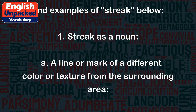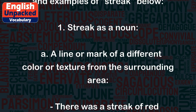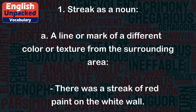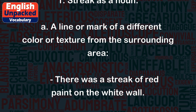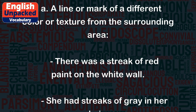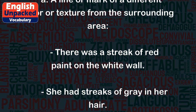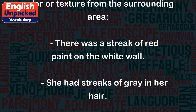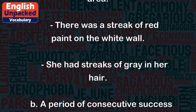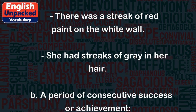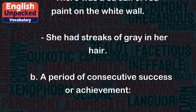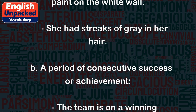1. Streak is a noun. A. A line or mark of a different color or texture from the surrounding area. There was a streak of red paint on the white wall. She had streaks of grey in her hair.